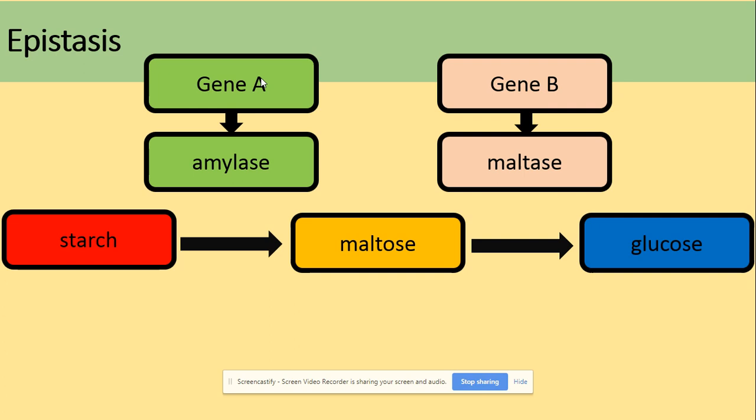In another situation, imagine you have dominant homozygous for gene A — so you're producing amylase — but you've got recessive homozygous for gene B. In other words, you're not going to produce maltase. So in this situation, even though you produce maltose, you do not have maltase because there are no dominant alleles for gene B, and you're not going to get glucose.